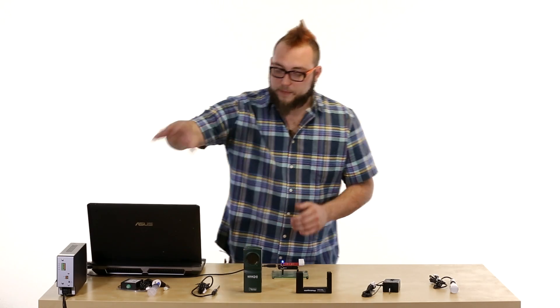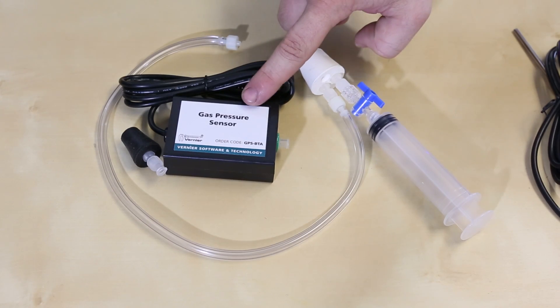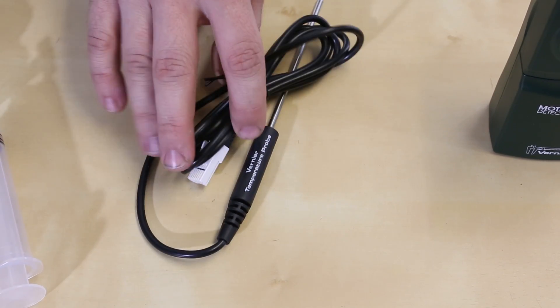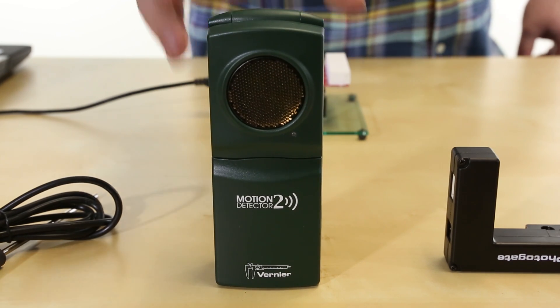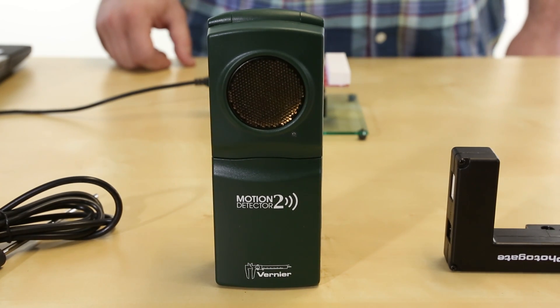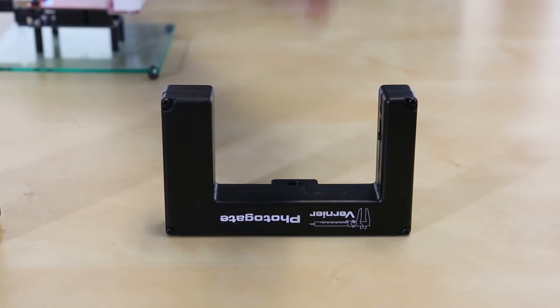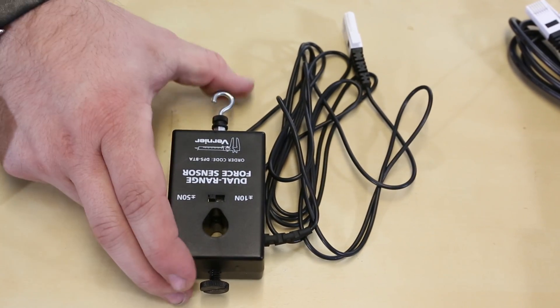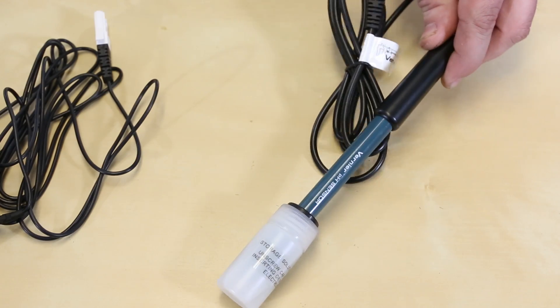So you can combine pre-existing science curriculum that uses these sensors with maybe a new curriculum that includes data collection with Arduino or programming. So we're actually carrying a small range of their sensors to go along with our interface shield. And they've released Arduino code for all of these sensors. So starting from this side, we have a gas pressure sensor, we have a temperature probe, a motion sensor, which is actually a sonic range finder, a photo gate, a dual range force sensor, and finally a pH sensor.